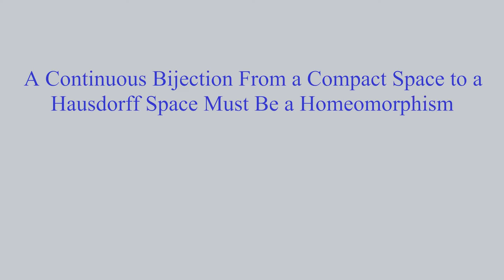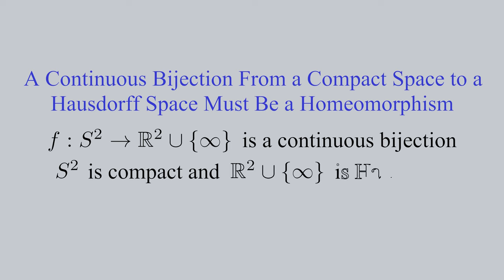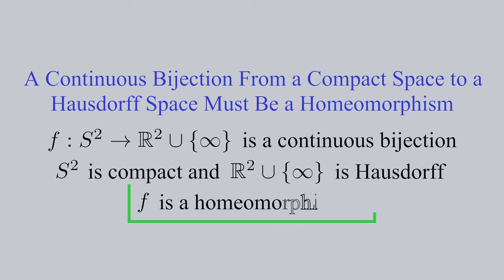A continuous bijection from a compact space to a Hausdorff space must be a homeomorphism. We know that our stereographic projection function F from S2 to the extended plane is continuous and bijective. We know that our two-sphere is compact and that the extended plane is Hausdorff. Therefore, we can finally say that F is a homeomorphism.